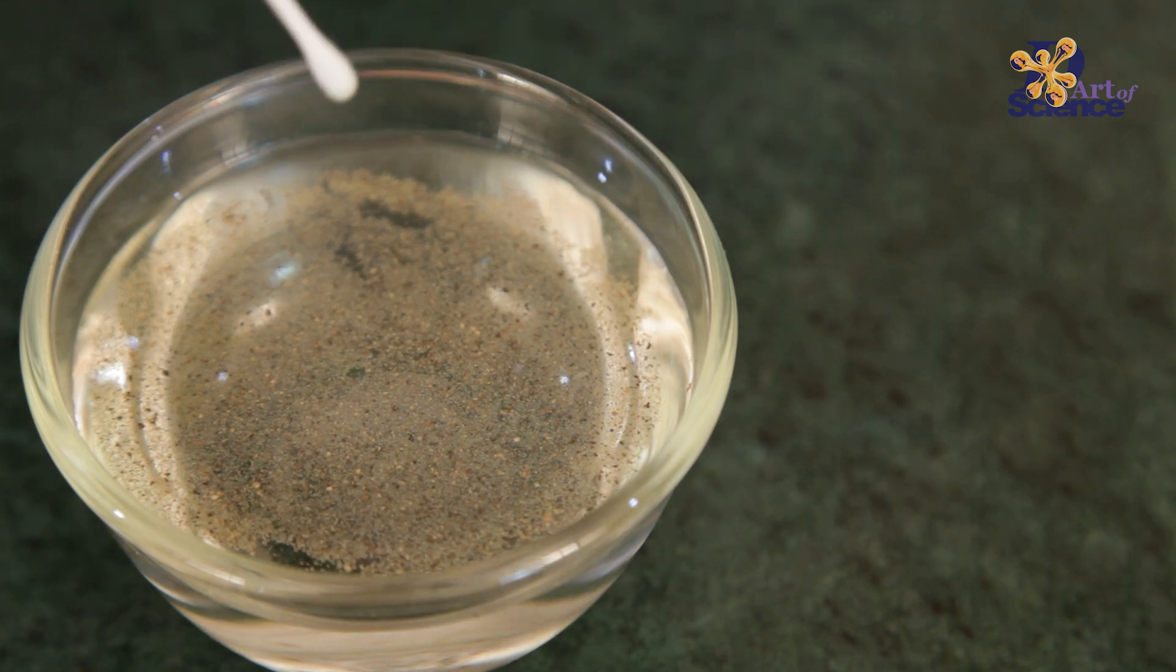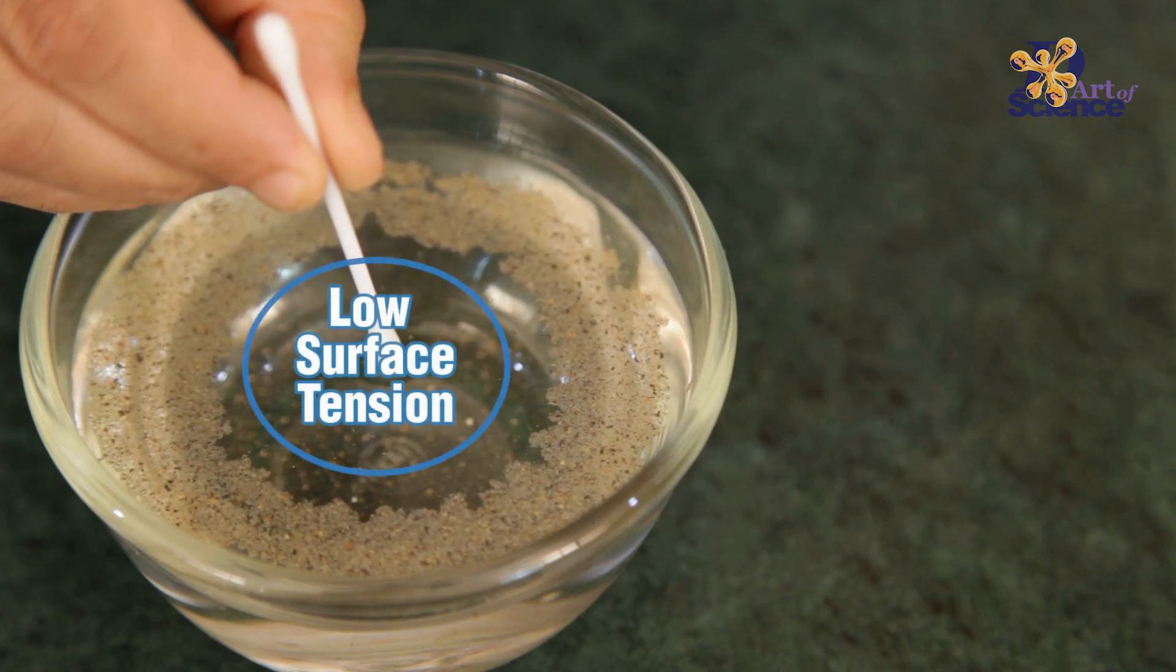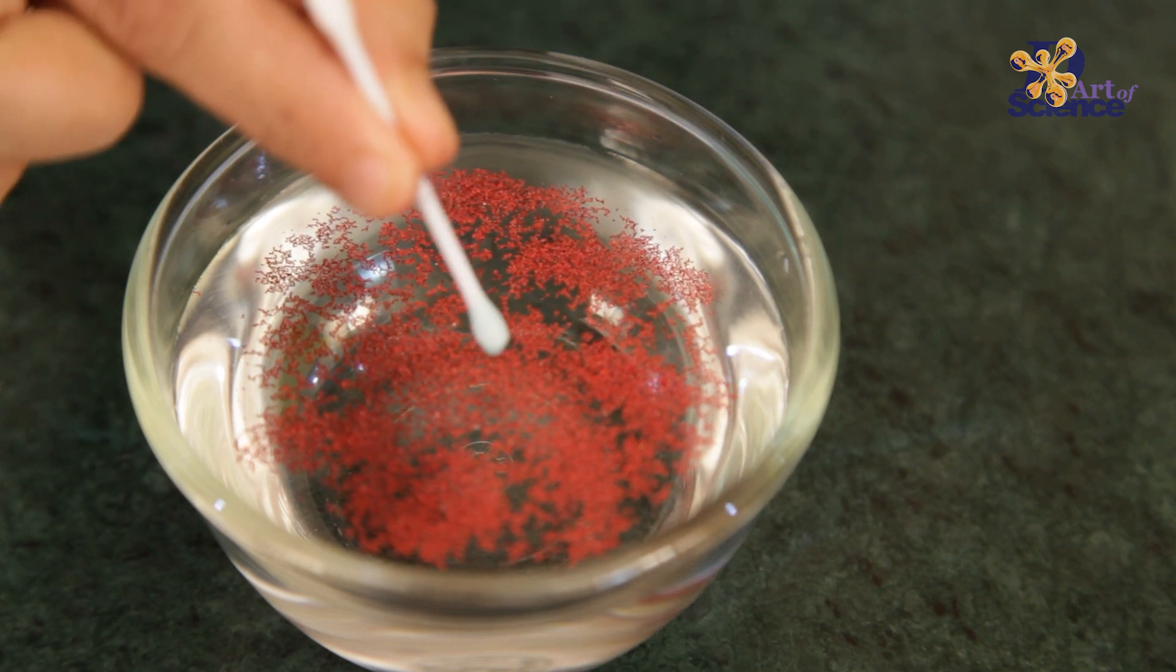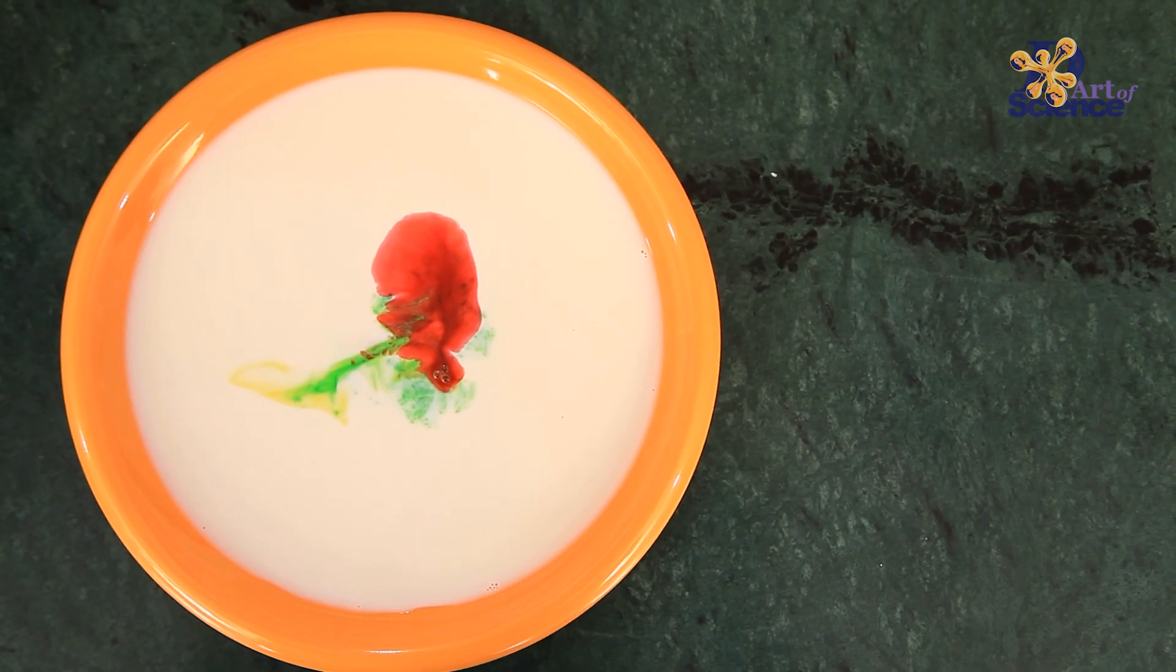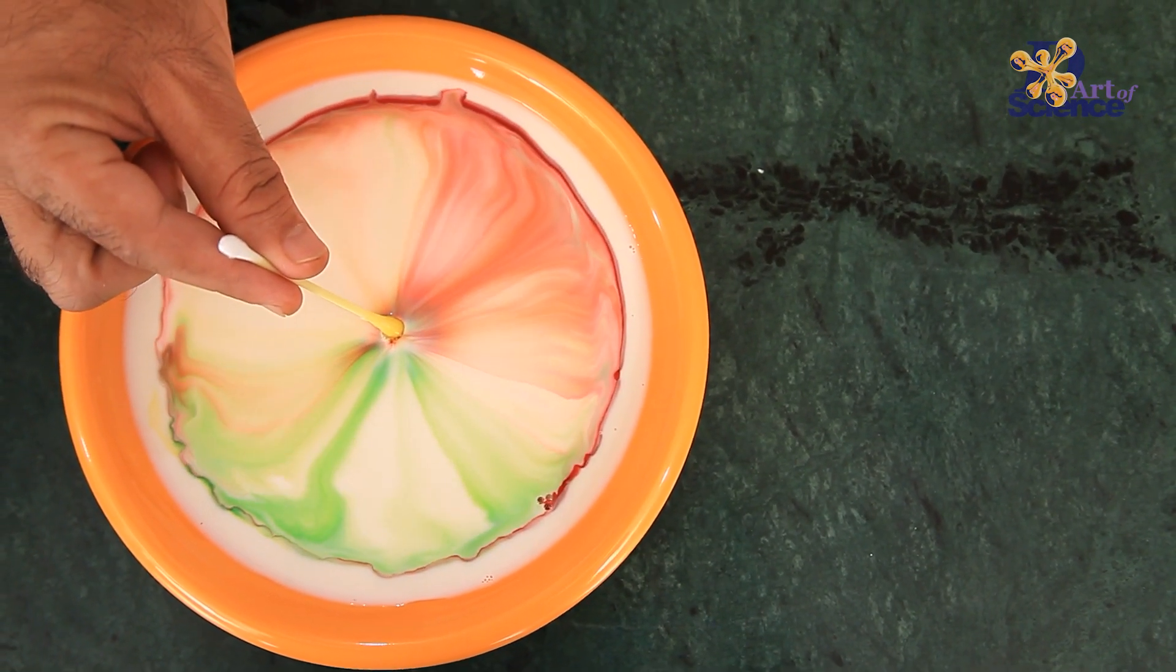When this soap comes in contact with the surface of water, it reduces the surface tension of that area, causing all the water molecules and the other particles with it to be pushed to the sides. Do you think the same happens with milk as well? Click the link up here to check the video and let me know what you think happens in this experiment.